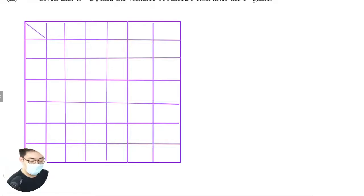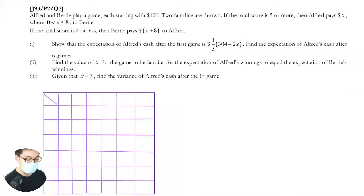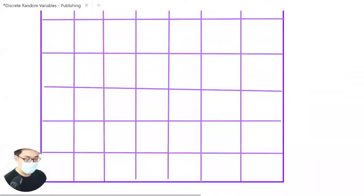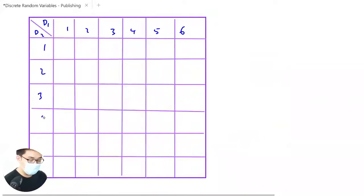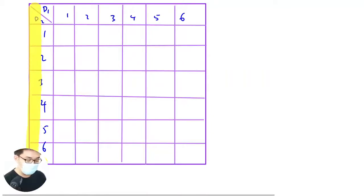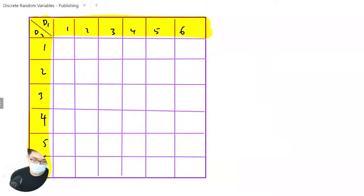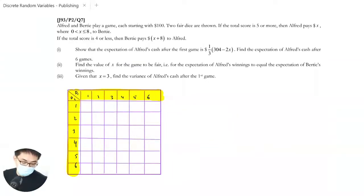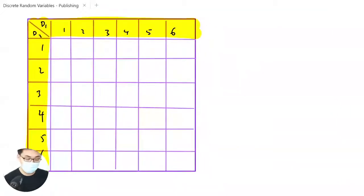Die number one, die number two. So X is the amount Alfred pays. Die number one, die number two. One, two, three, four, five, six. Total score, so you just add the total score here, D1 plus D2.